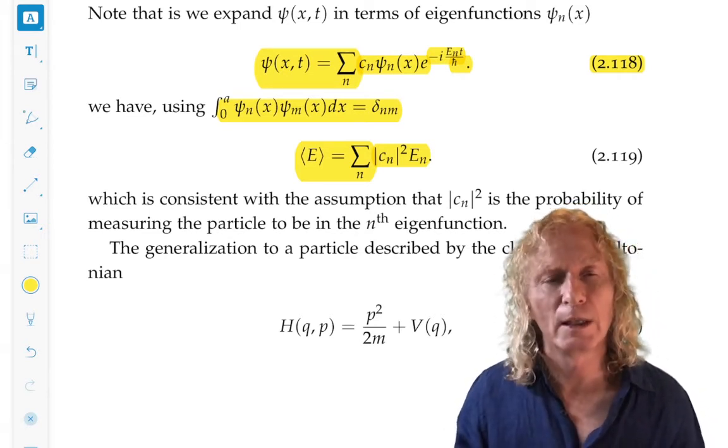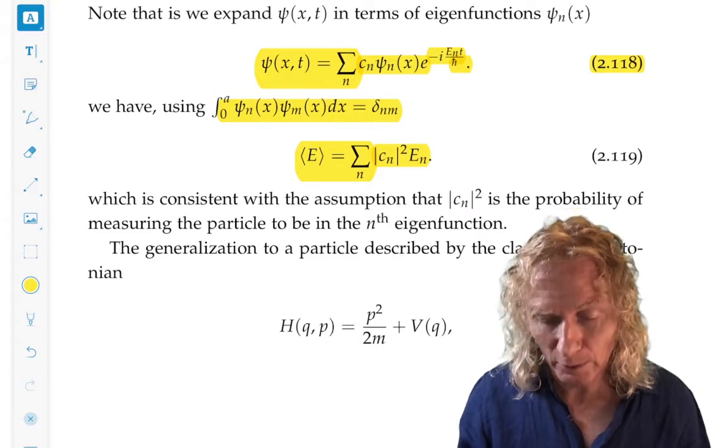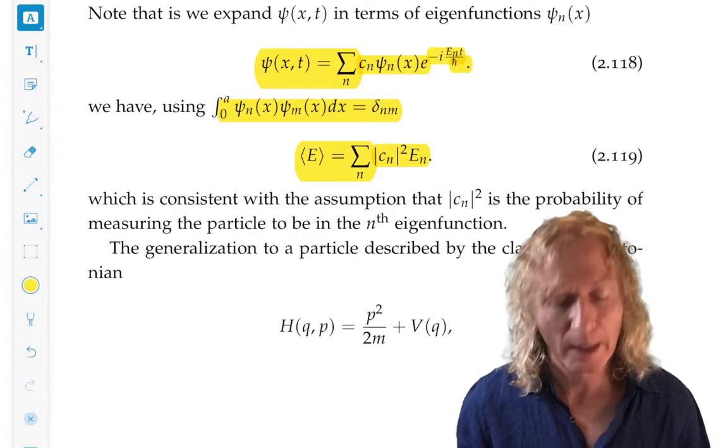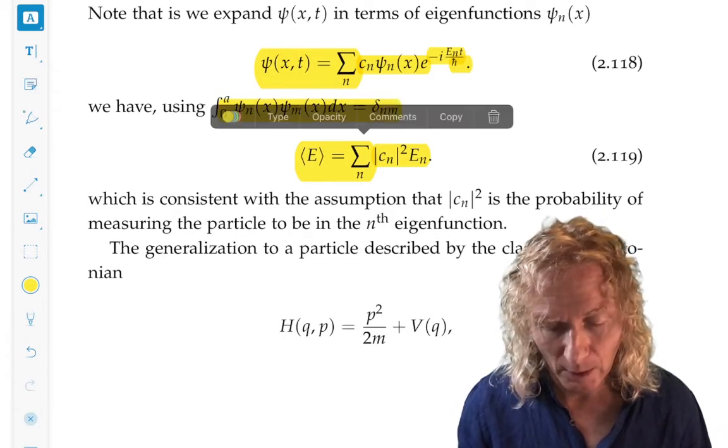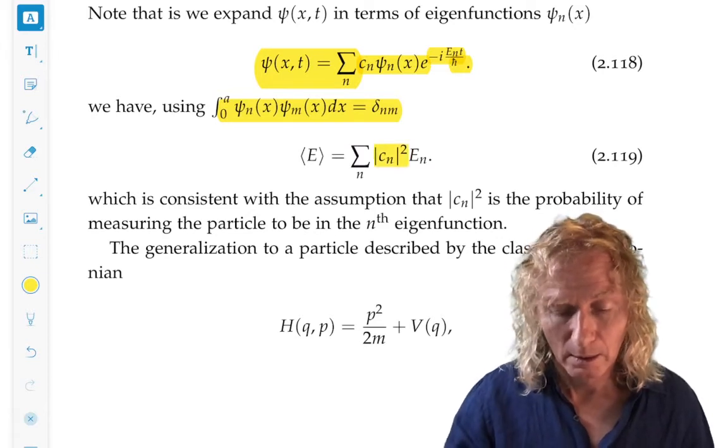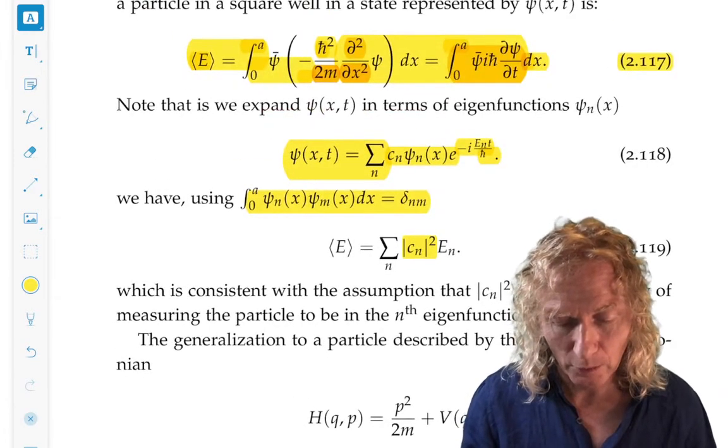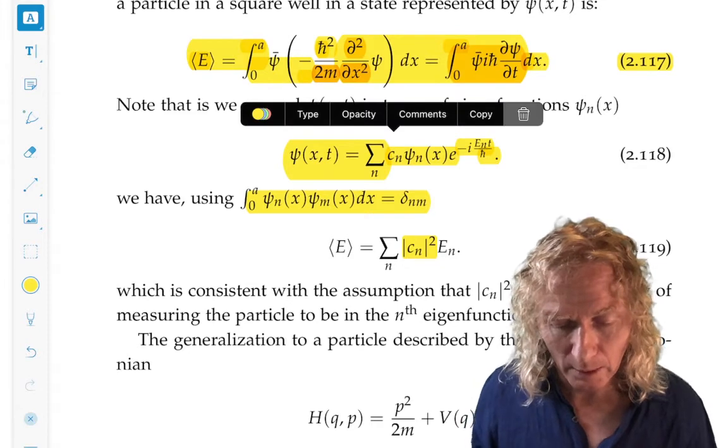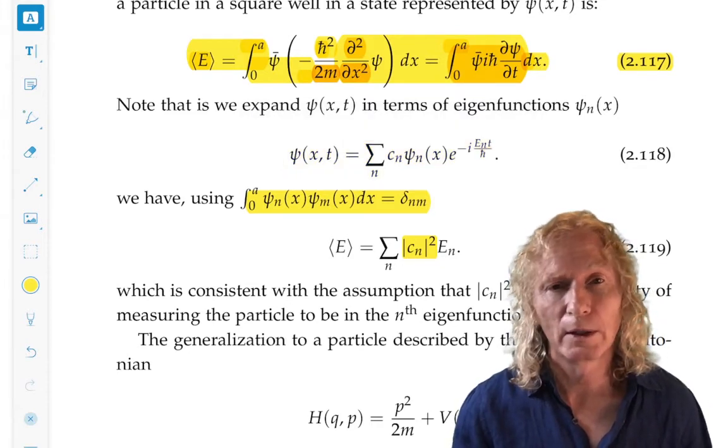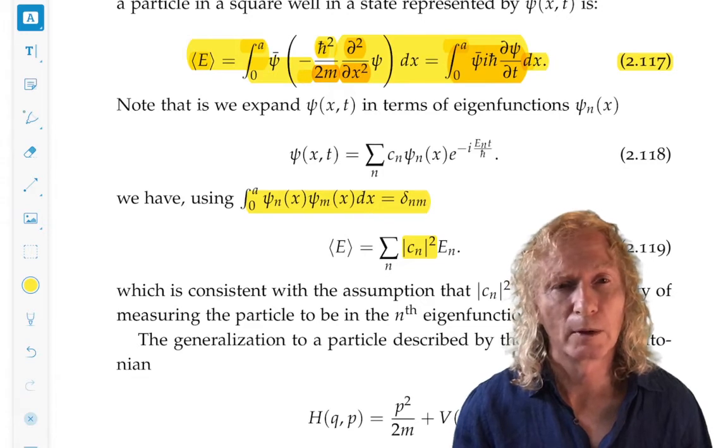That the expectation value of the energy in this general state 2.118 is a weighted sum of eigenvalues e sub n, where the weighting mod c n squared is the amplitude of each of the contributions of the stationary states describing the square well.